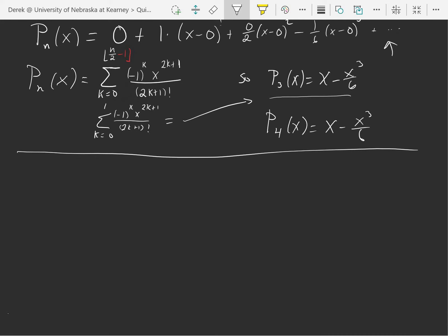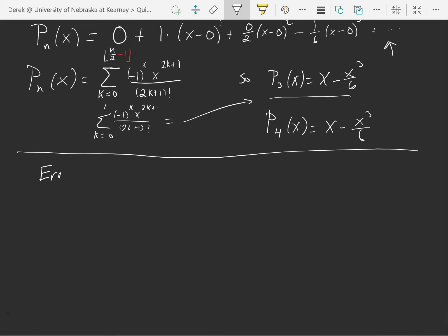Okay. Taylor's theorem states that the error is equal to, for the degree n polynomial, the n plus first derivative at some c value between alpha and beta divided by n plus 1 factorial times beta minus alpha to the n plus 1.